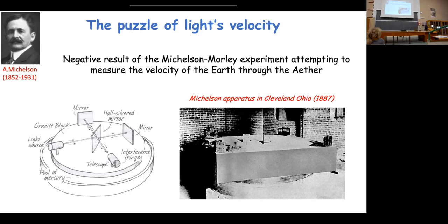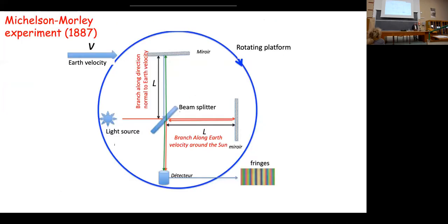Michelson invented an apparatus called the Michelson interferometer. You see here a sketch of this interferometer and a photograph of the historical apparatus. It was placed on a very solid granite platform floating on a bath of mercury, so it was possible to rotate the platform and change the direction of the light with respect to the Earth's orbital direction.